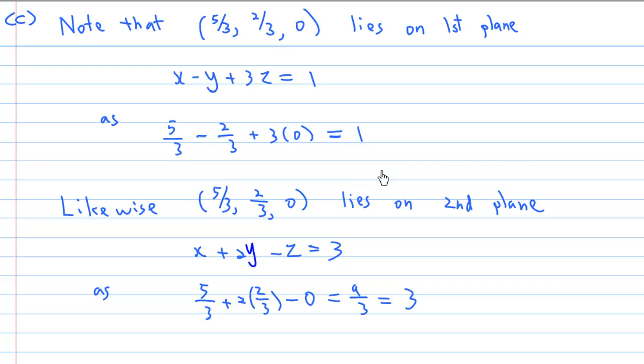Likewise (5/3, 2/3, 0) lies on the second plane x plus 2y minus z equal to 3. Because when you substitute x equal to 5/3, y equal to 2/3, and z equal to 0, you find that this is equal to 3 as well.